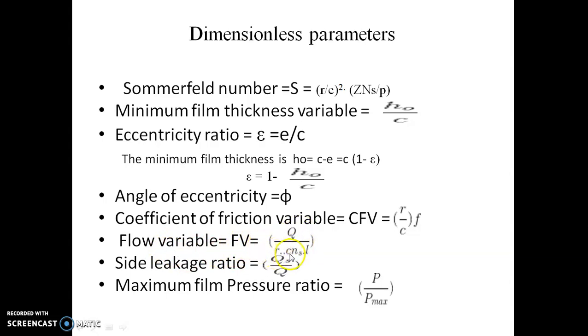The next one is flow variable FV = q/(rcnsl), where q is total oil flow, r is radius of shaft, c is radial clearance, n is speed of shaft in rps, and l is length of bearing. Then side leakage is given by qs/q and maximum film pressure ratio is given by p/pmax.